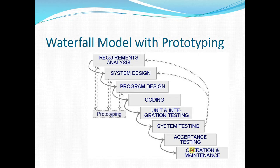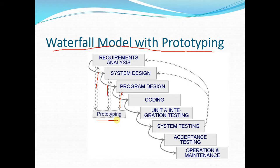To solve that issue, there is a different version called the waterfall model with prototyping. In the first three phases, we use prototyping. Prototyping is a partially developed product — a model or demo of the actual product that contains hardcoded values just to show the final picture of the product to the client. As they say, one picture is worth a thousand words, so from this demo the client can actually decide if this is what they want.